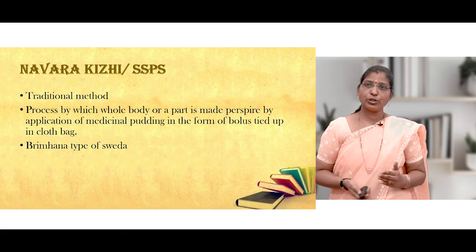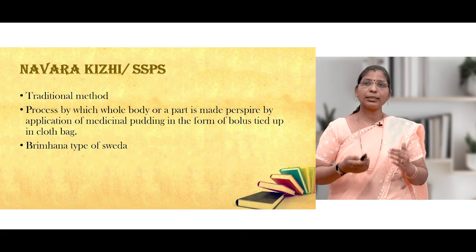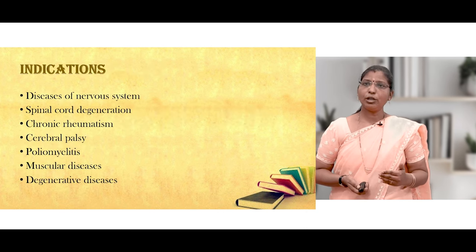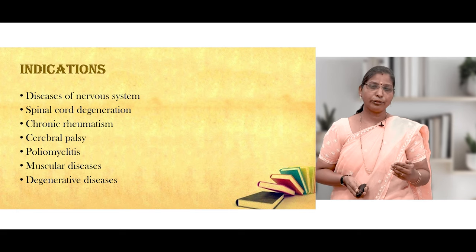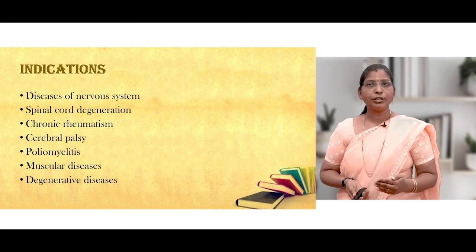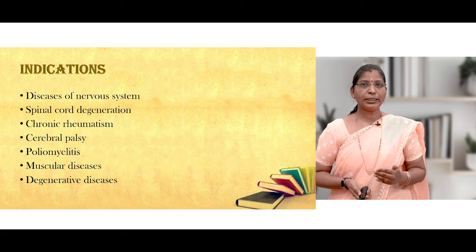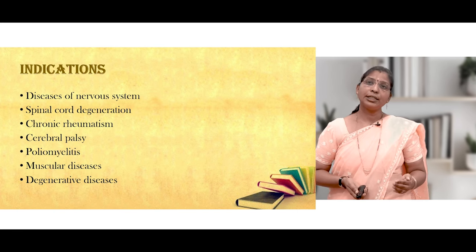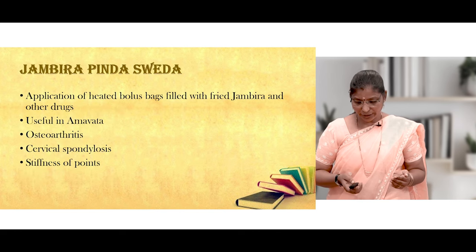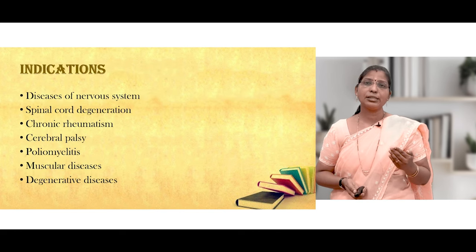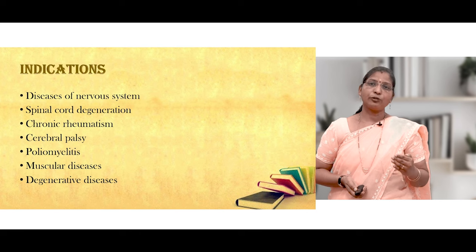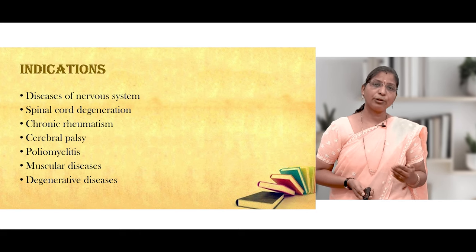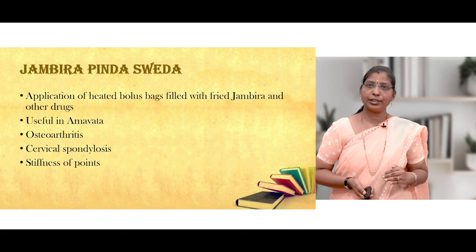Shashti Shalipindha Sveda is a Bruhana type of Svedhana indicated in diseases of the nervous system, spinal cord degenerative diseases, chronic rheumatism, cerebral palsy, poliomyelitis, and muscular degenerative diseases. It is contraindicated in oozing skin diseases, Amavastha, fever, or Kapha predominant conditions.